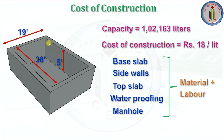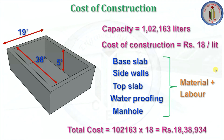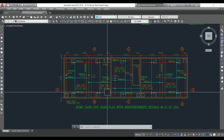The client always pays based on the inner capacity, which is why we calculated the inner dimensions. The inner capacity is 1,02,163 liters at ₹18 per liter. So the total cost of construction comes to approximately ₹18,38,934. To construct a 1 lakh liter capacity underground water tank, you need to spend around ₹18,38,934.